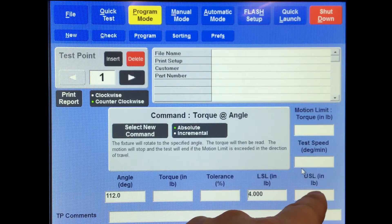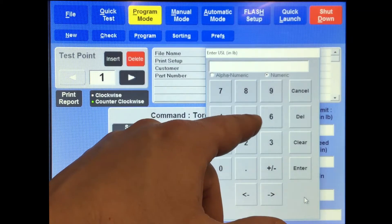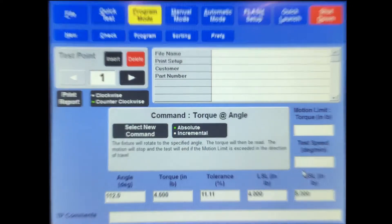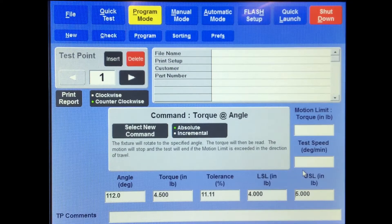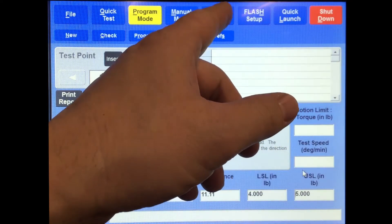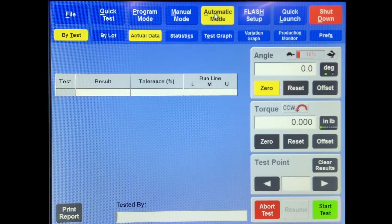On the low side, it can be as good or as bad as 4 inch pounds, and on the high side it can be as good or as bad as 5 inch pounds. So that gives me what I need. Then we're going to go to automatic mode and we're going to try it out.